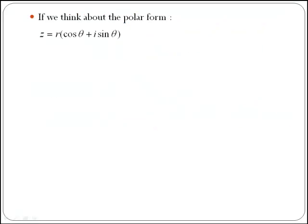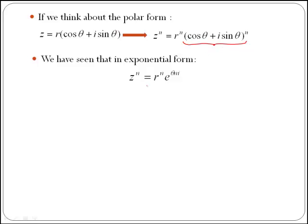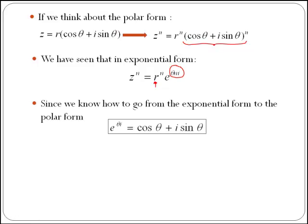If we think about the polar form, z equals r times (cos θ plus i sin θ). To calculate z to the n, we get r to the n times (cos θ plus i sin θ) to the n. That bracketed part doesn't look easy to expand directly. However, in exponential form z to the n equals r to the n times e to the power of θni, and since e to the power of θi equals cos θ plus i sin θ, we can replace the exponential using a similar formula.